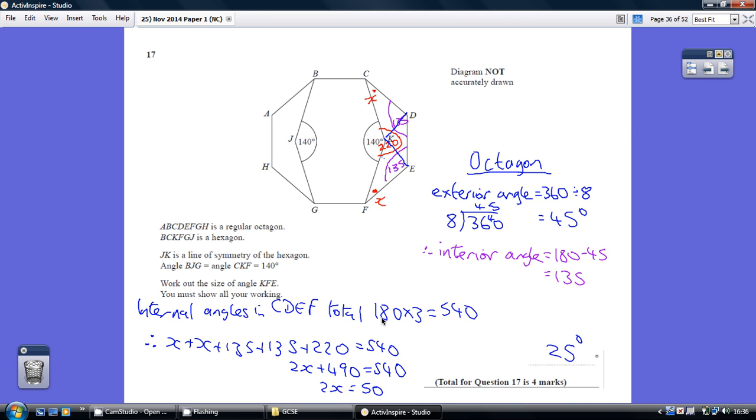So basically 540, take away that 220, take away that 135, take away that 135, leaves us with 50 degrees. That 50 degrees is spread equally over these two angles here. So halving the 50, we get our final answer of 25.